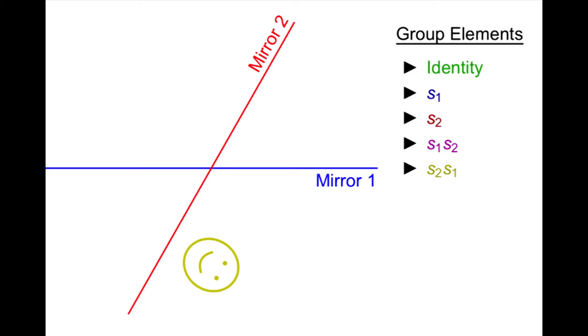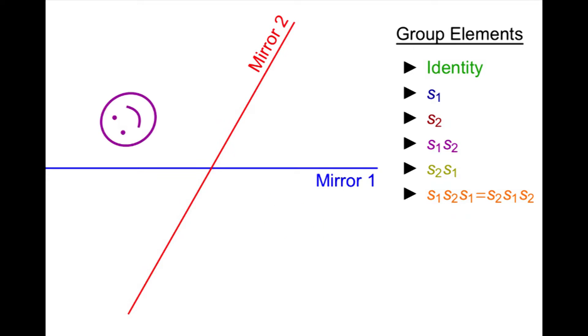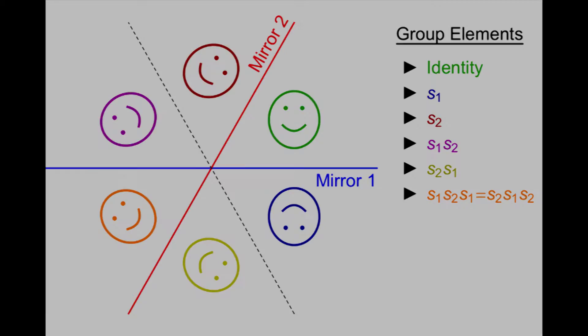How about sequences of three reflections? Well, we still have to alternate between our generators if we want to get new elements. So we have two possibilities: S1, S2, S1, or S2, S1, S2. But wait, I said there are only six elements. There are. S1, S2, S1 is the same as S2, S1, S2, for our six distinct elements.